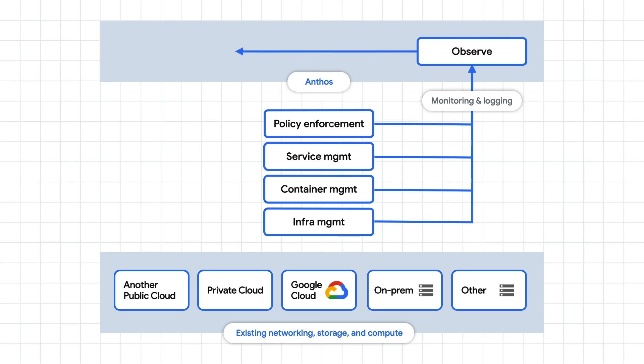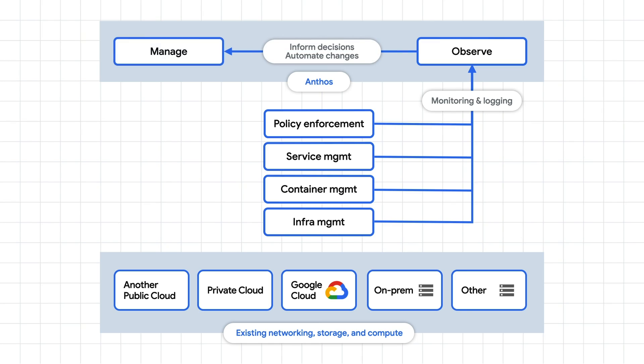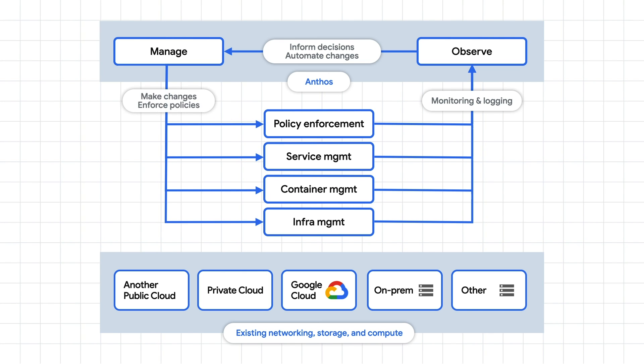With this information, you might decide to optimize, automate, and set policies or SLOs, or might rely on machine learning models to make automated suggestions. You take those recommendations or make your own decisions and apply them to different management layers. Simple, right? Not quite.